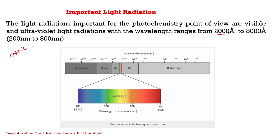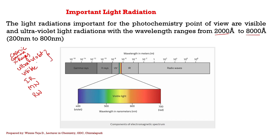There are different light radiations that come from the sun: cosmic rays, gamma rays, X-rays, ultraviolet rays, visible radiations, infrared radiations, microwaves, and radio waves. The radiations that are important in photochemistry are ultraviolet and visible radiations, with wavelength ranges from 2,000 angstrom units to 8,000 angstrom units.